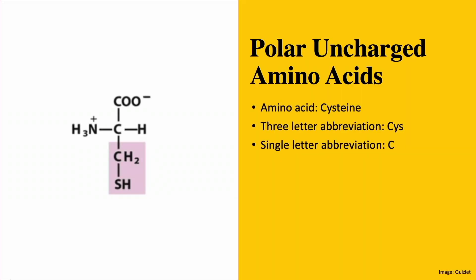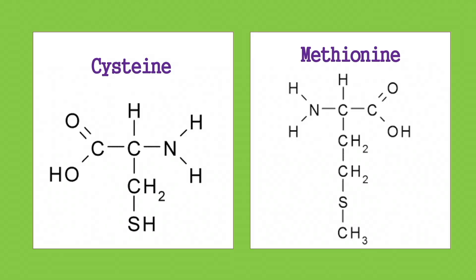Now let's look at cysteine, which is the amino acid in the second box. The structure of cysteine has a sulfhydryl group at the end of the R side chain. Similar to amino acids with OH groups, amino acids with sulfur atoms are relatively easy to identify because only two of the 20 amino acids have sulfur atoms: methionine and cysteine. One quick difference is that methionine has a longer side chain than cysteine, and in methionine the sulfur atom is found in the middle of the side chain, while in cysteine it is found at the end.